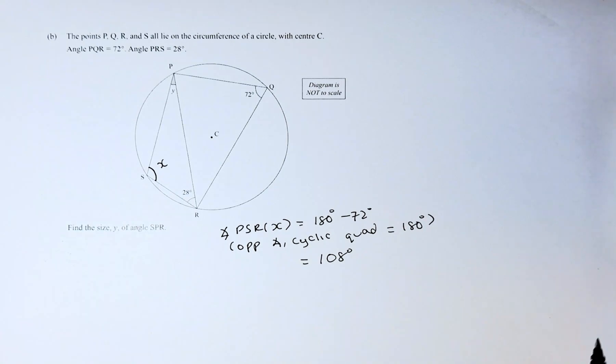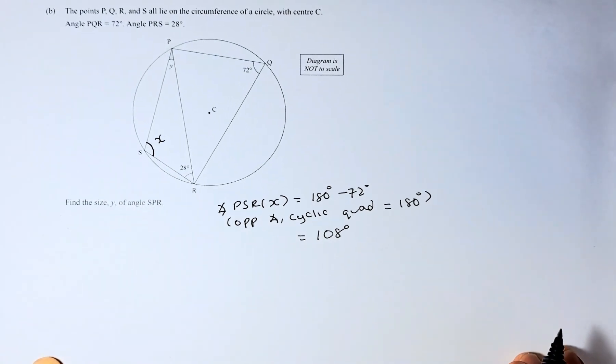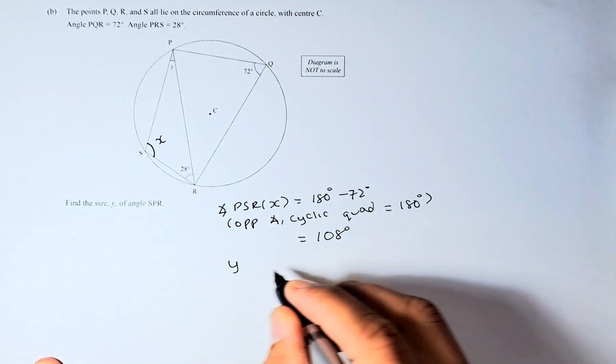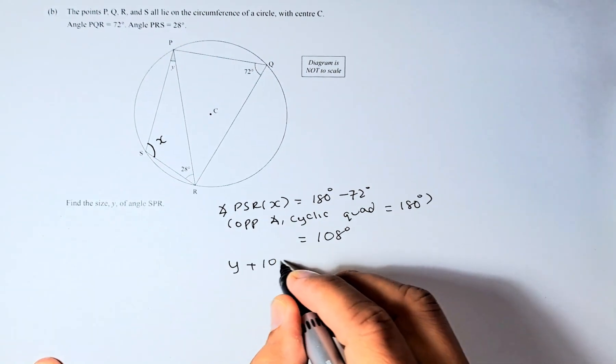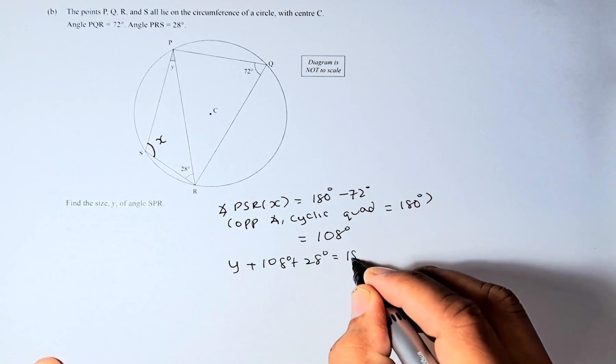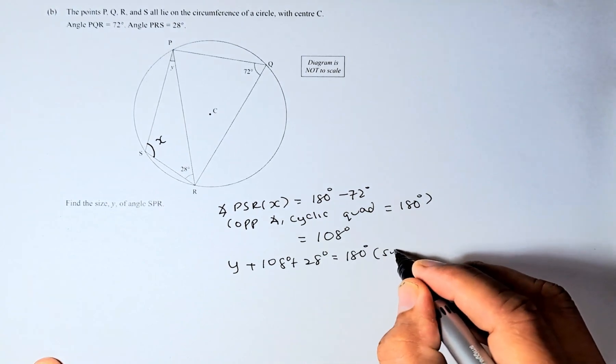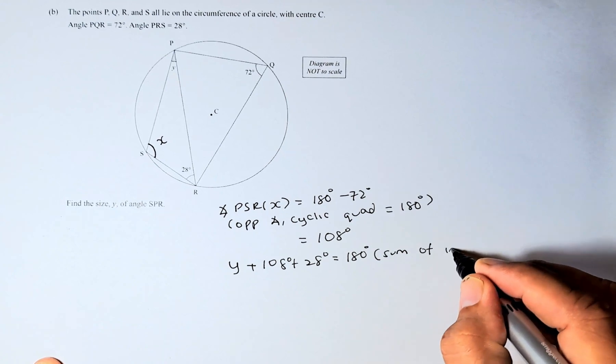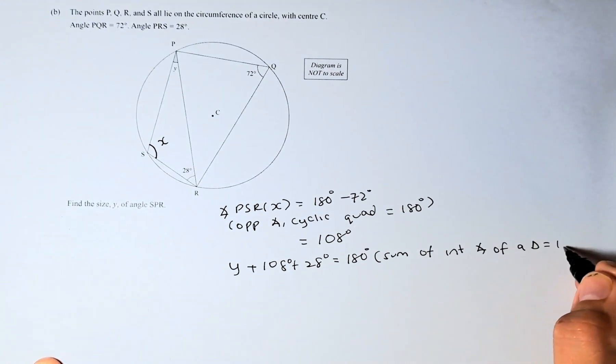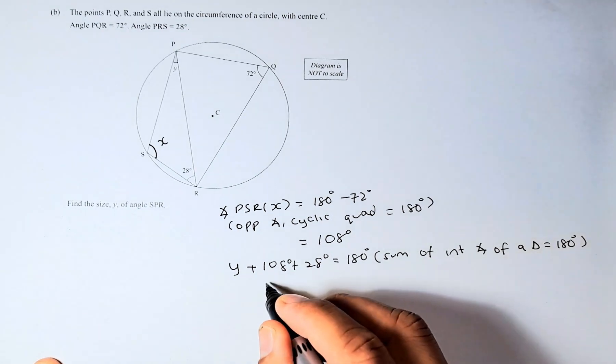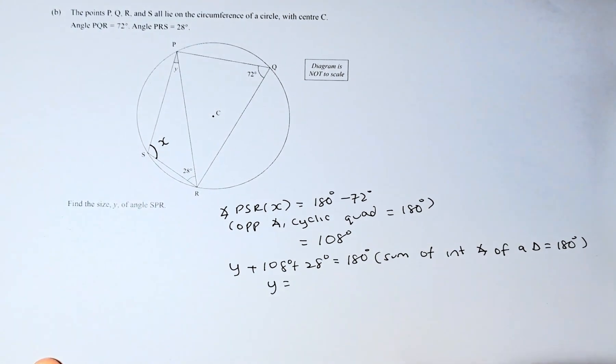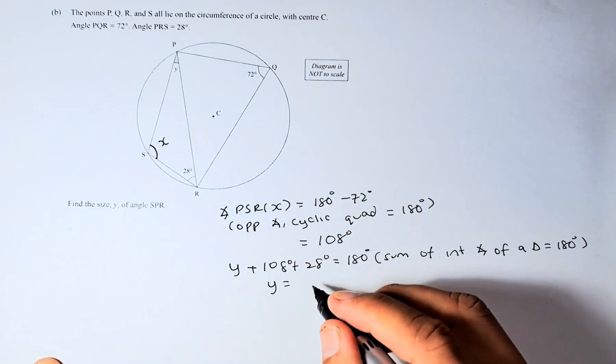Once we've found that, we can calculate angle Y. Y plus X, which is 108 degrees, plus 28 degrees equals 180 degrees. The reason being the sum of interior angles of a triangle add up to 180 degrees. So Y equals 180 minus 108 minus 28, which equals 44 degrees.